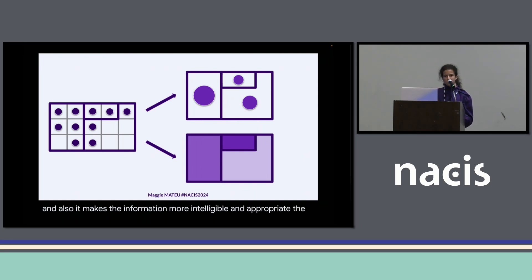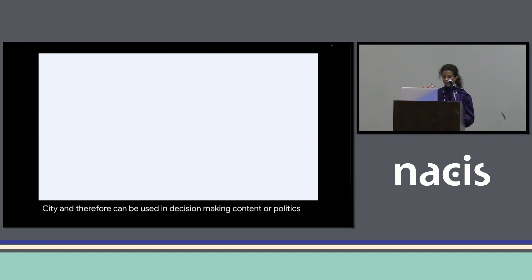The information now displayed on the second maps becomes the qualifier of the subject district or city, and therefore can be used in decision-making content or politics. But as many maps used in politics and in the medias display a simple yet biased version of reality.